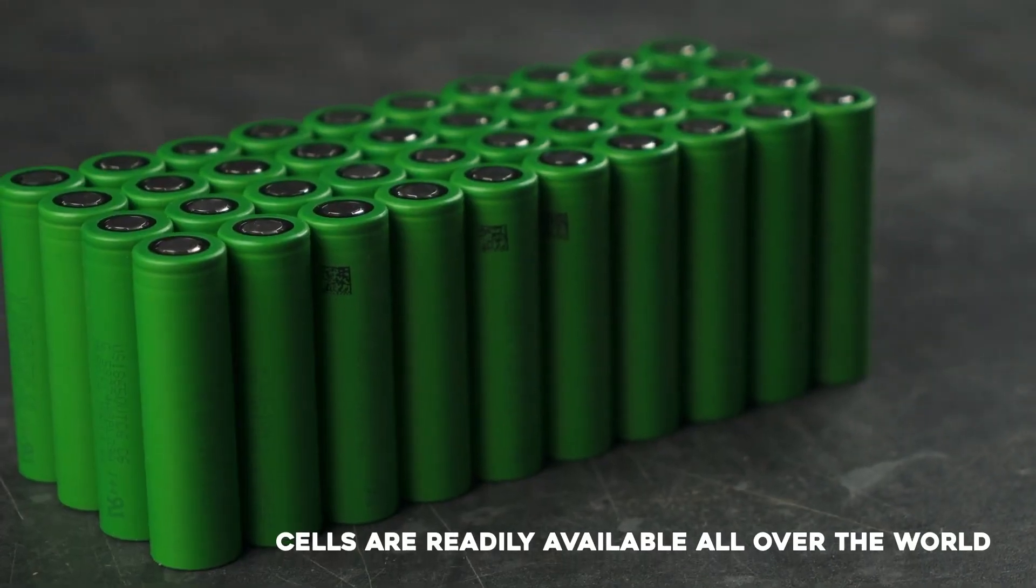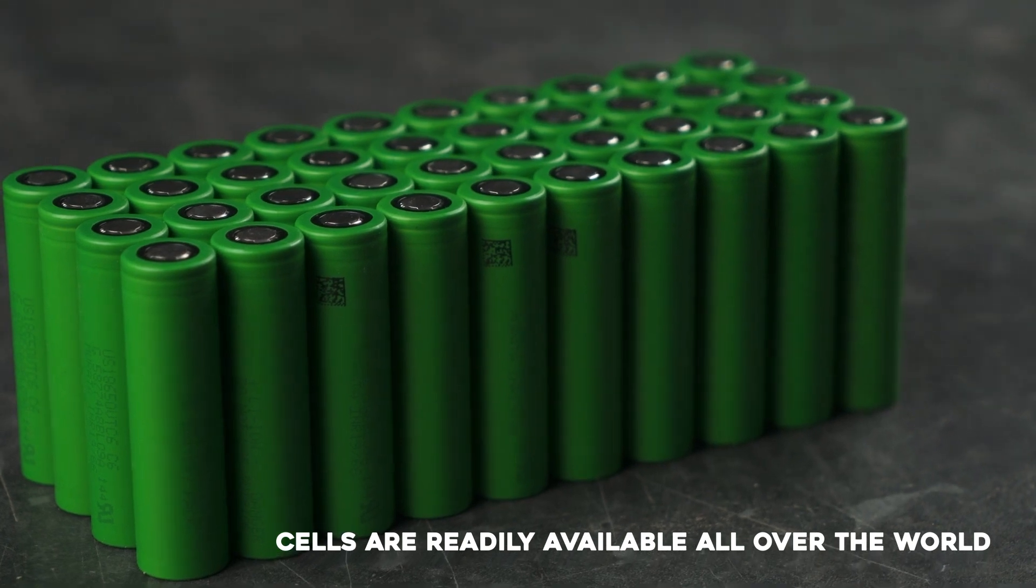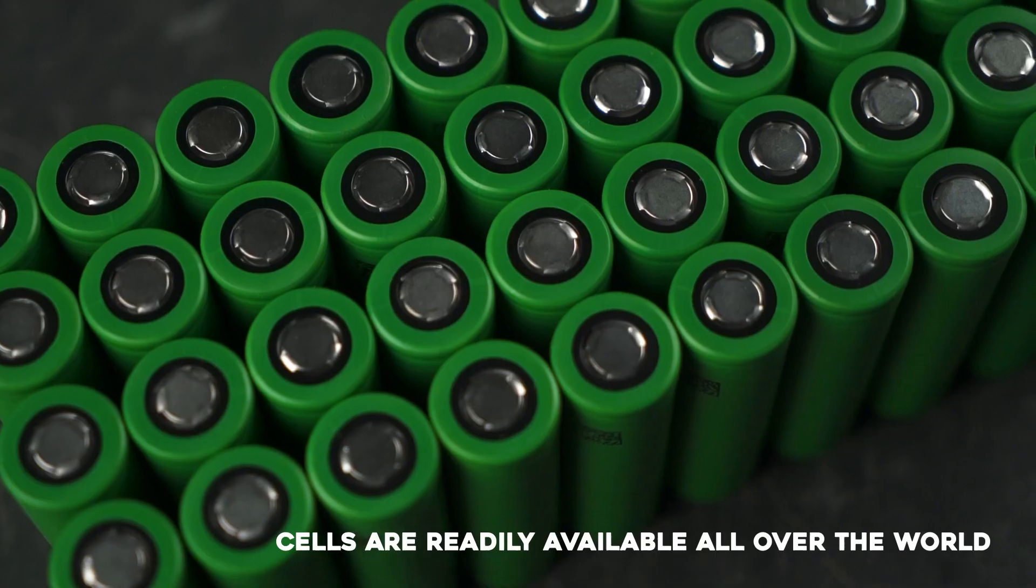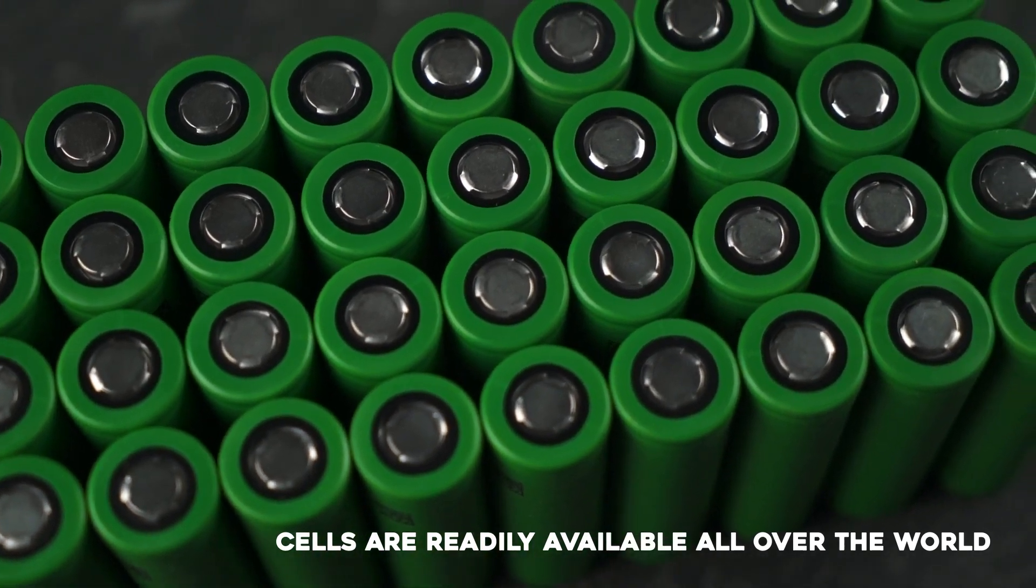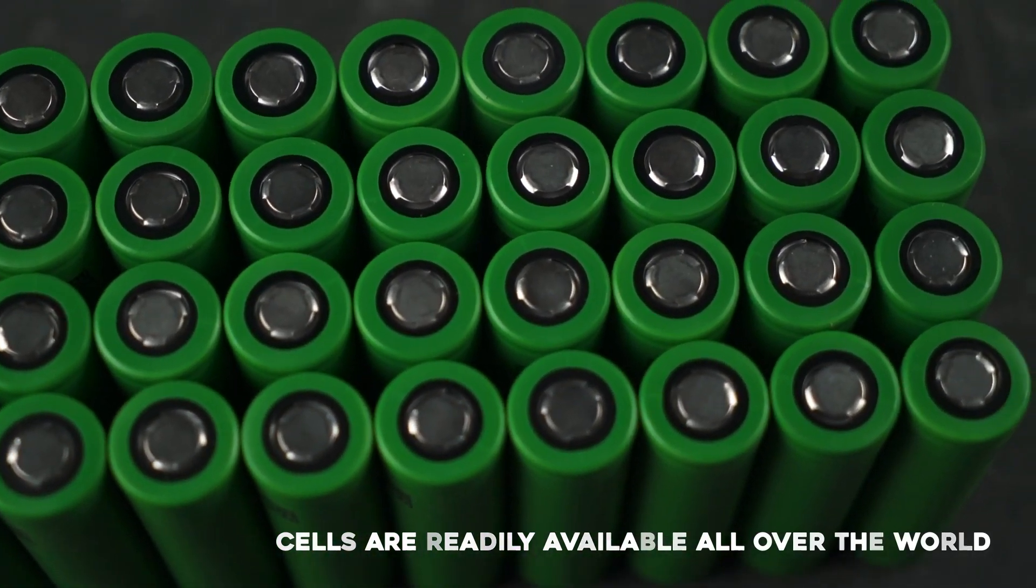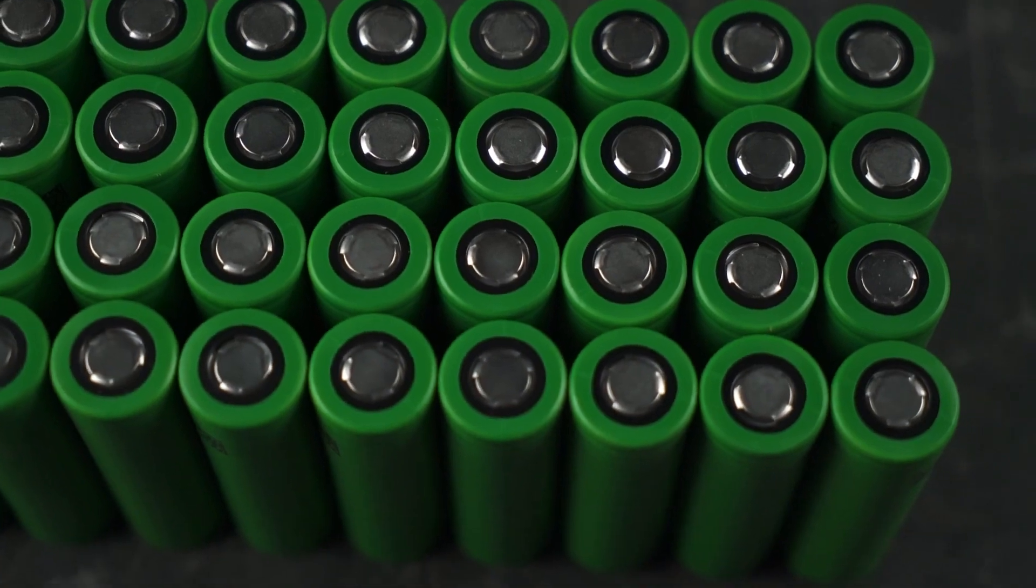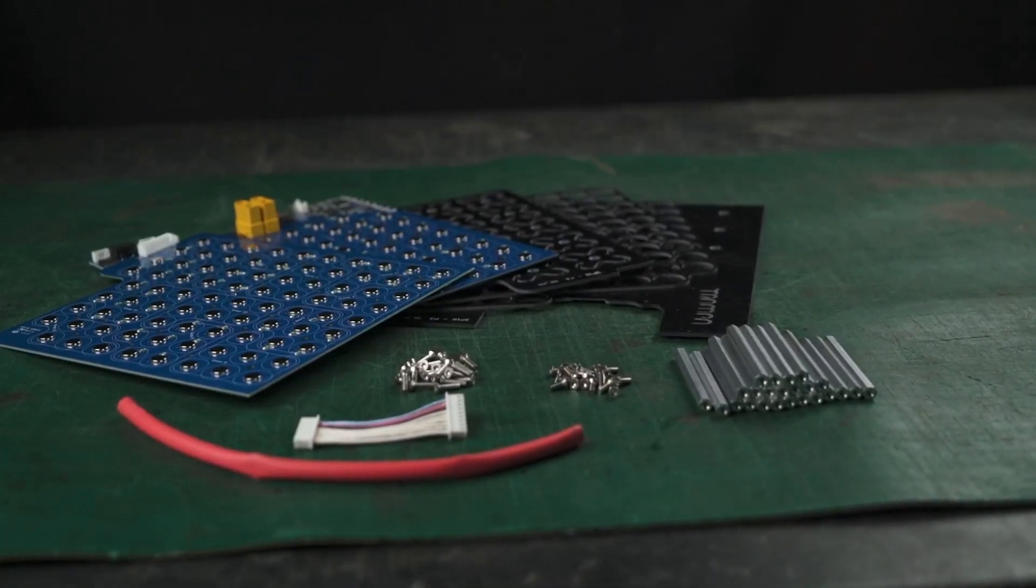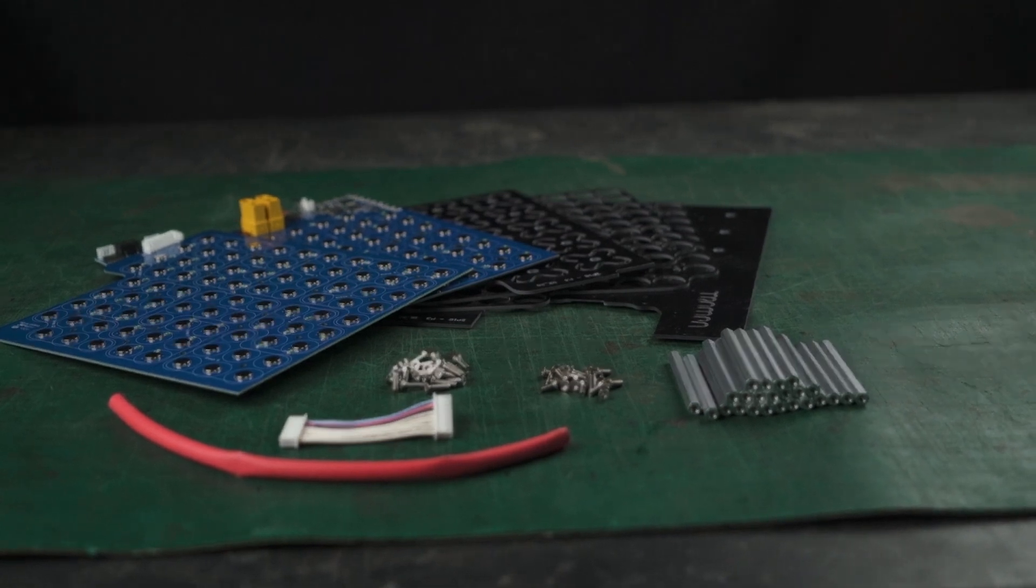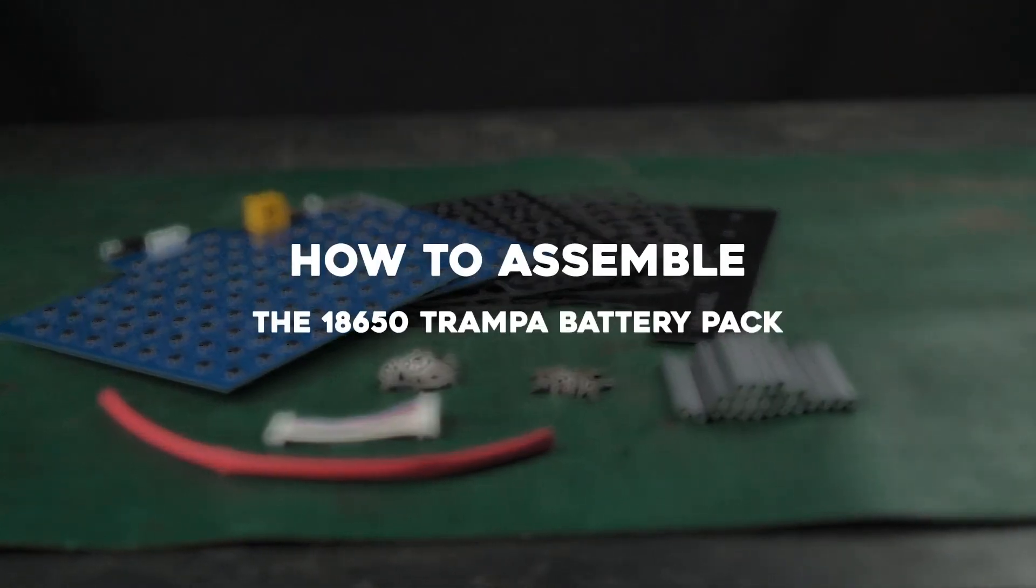Customers outside the UK, unfortunately, cannot purchase any pack with cells included. When purchasing a full board with the battery pack outside the UK, it will come partly assembled, ready for you to slide in the cells. If customers outside the UK purchase either of the packs separately, without a board, they will both come flat packed and you will have to assemble it yourself. That's what we are going to show you how to do today.